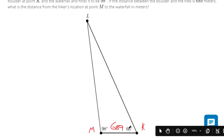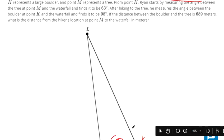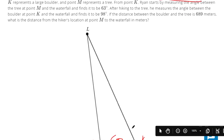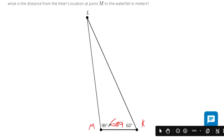So it says the distance between the boulder and the tree is 689 meters. It tells us the angle between k and the waterfall. After hiking, sorry, Ryan starts by measuring the angle between the tree at point m and the waterfall. So this angle here is 63 degrees, which they have labeled.